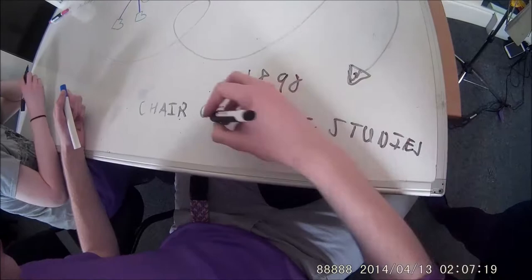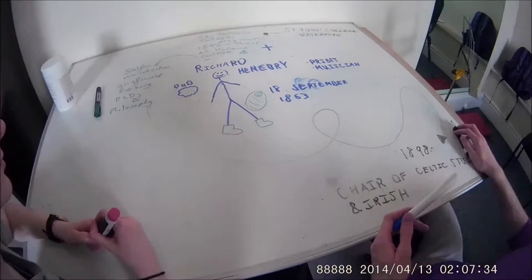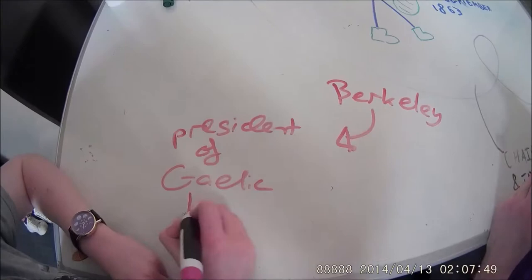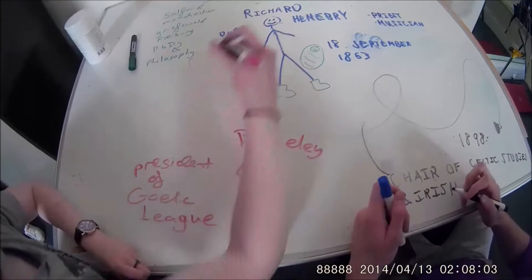In 1898 he was appointed the Chair of Irish and Celtic Studies in the Catholic University of America in Washington DC. He didn't remain in the position for long however, and moved on to Berkeley University in California. He also became President of the Gaelic League of America.